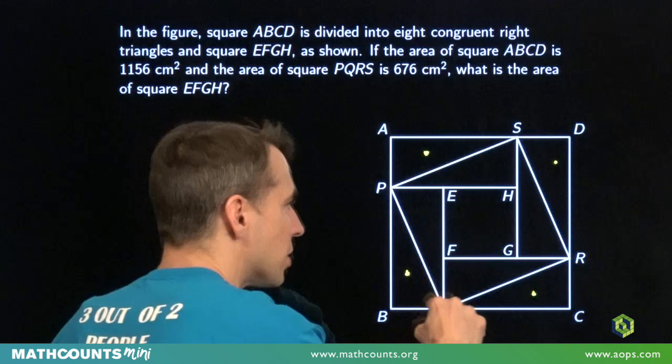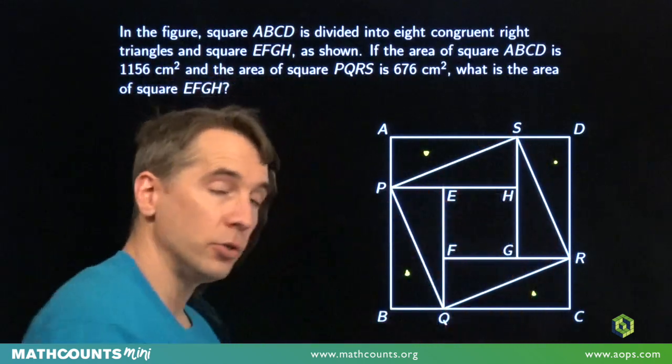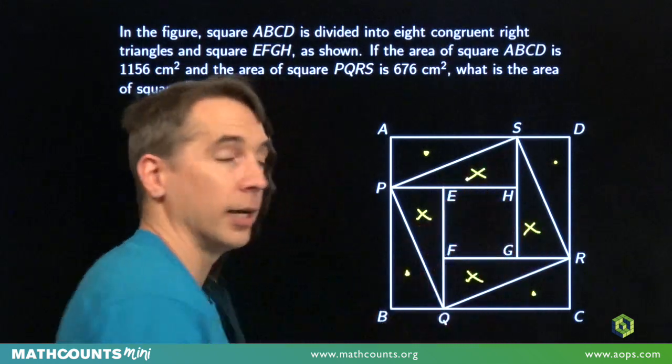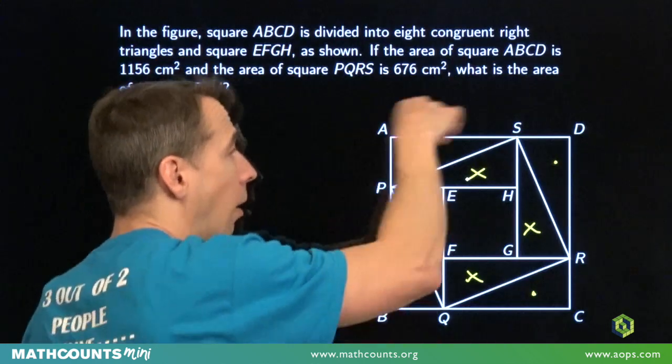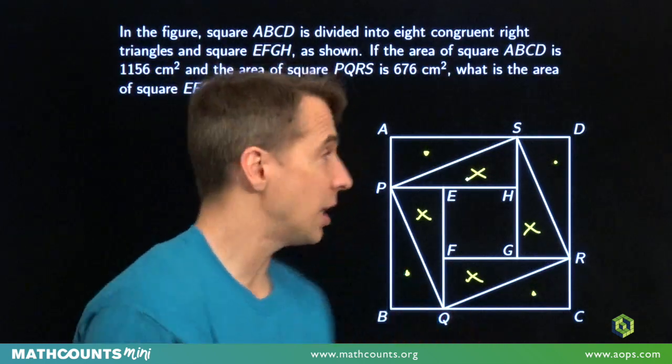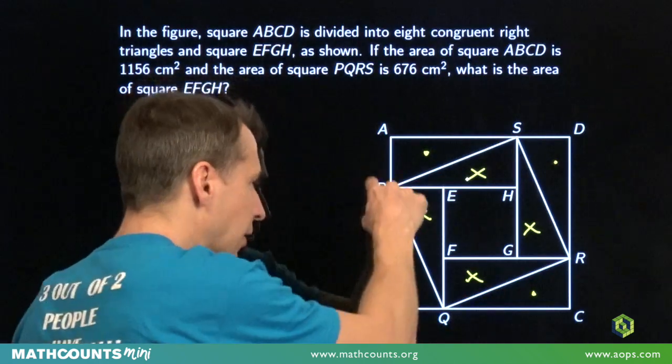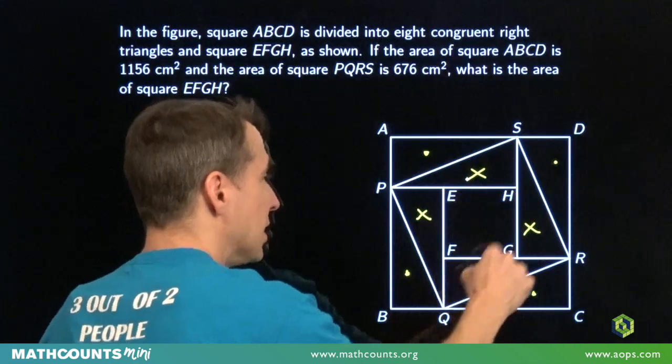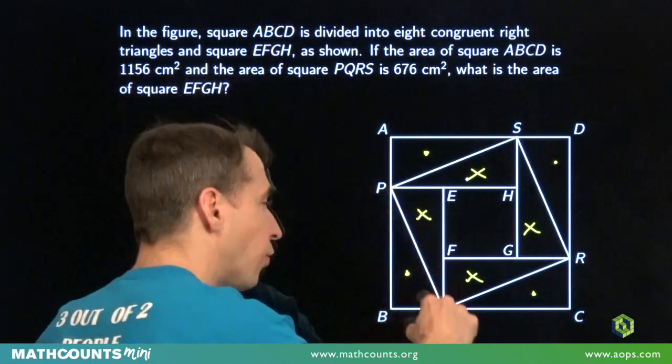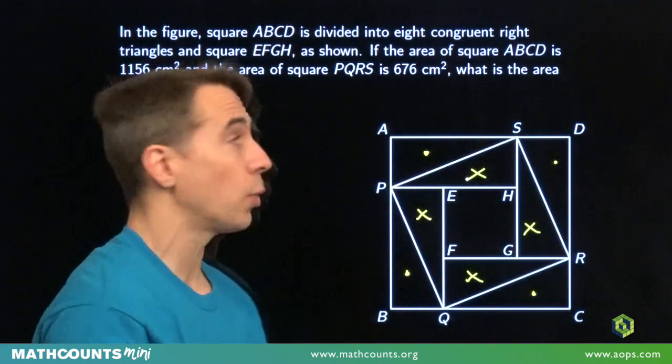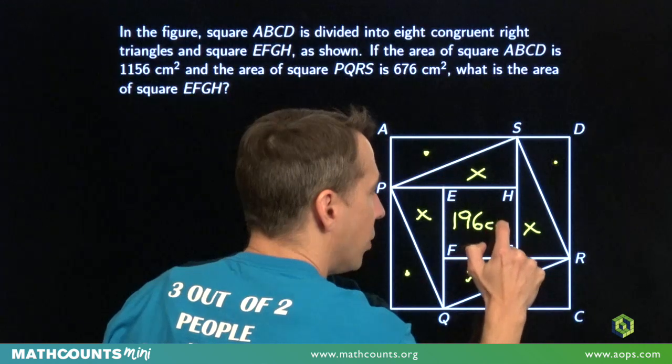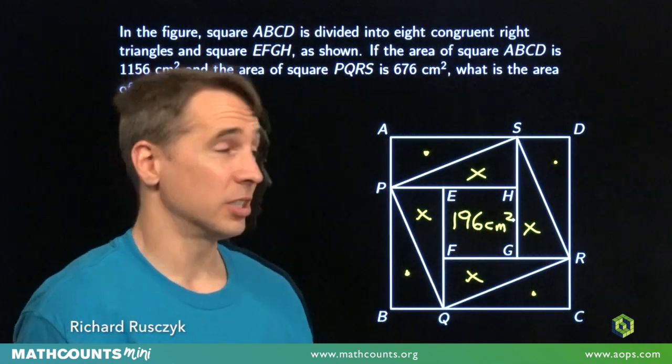And then we take a look at the difference between the crooked square and the little square whose area we have to find. The difference between those two squares, this triangle, this triangle, this triangle, and this triangle. Once again, four of these right triangles. And all of these right triangles are congruent. So these four right triangles, their area adds up to 480 square centimeters, just like these four do out here. So the difference between the crooked square and the little square is these four triangles whose areas add up to 480 square centimeters. So to get the area of that little square, we just take those 480 square centimeters away from the area of the crooked square. Subtract 480 from 676. And once again, the area of the little square, 196 square centimeters. Very pretty Harv. Thanks.